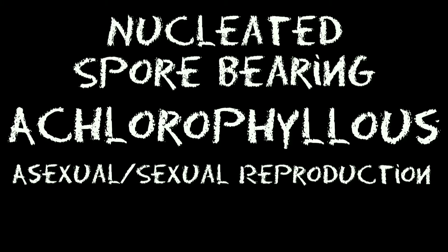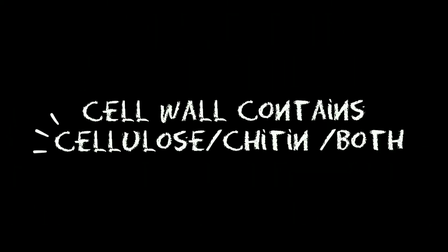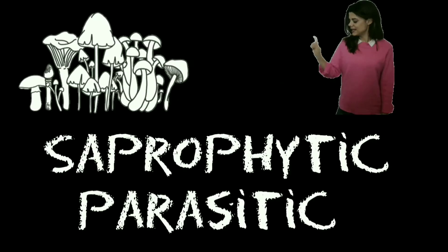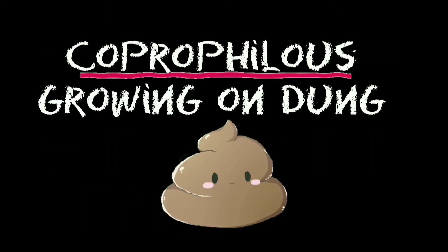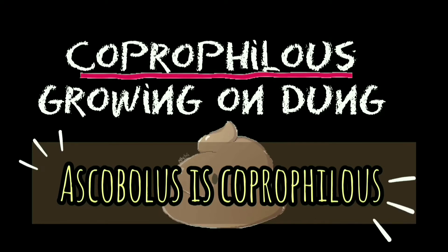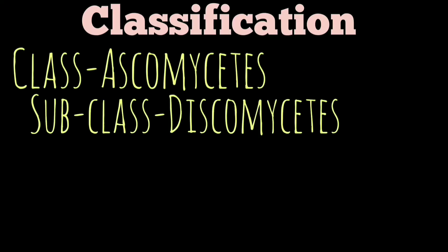We could define fungi as nucleated, spore-bearing, achlorophyllous organisms which generally reproduce sexually and asexually, and whose usually filamentous branched somatic structure is typically surrounded by cell walls containing cellulose or chitin or both. Based on mode of nutrition, fungi are of two types: mainly saprophytic and parasitic. The fungi growing on dung of herbivores are usually saprophytic and are called coprophilous fungi. Ascobulus species is one of these types of fungi.